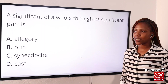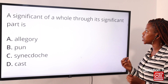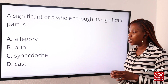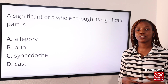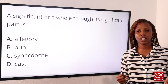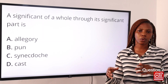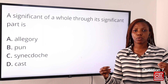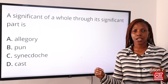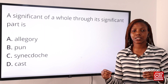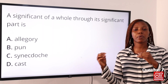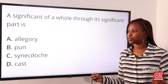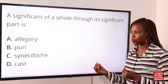Question seven: the representation of a whole through its significant part is Option A: allegory, Option B: pun, Option C: synecdoche, Option D: cast. The answer is synecdoche. Synecdoche is when a part is used to represent a whole and a whole is used to represent a part. The popular example 'all hands on deck' is synecdoche — 'hands' represents a whole person.